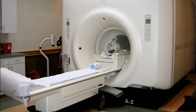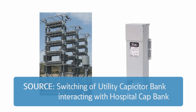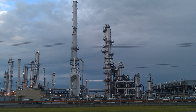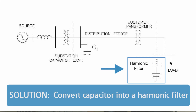Did you just apply a surge protector? No — in this case it required some detailed analysis. The symptom was the misoperation of MRI and CT scanners when the switching occurred, causing disruption and sometimes physical damage. The source was the utility cap switching, but it was related to the low-voltage cap in the hospital. We've seen this in other facilities like refineries and industrial plants using power factor correction caps. The solution was either to remove the low-voltage cap or make it into a detuned filter to move its resonant point so it wouldn't amplify the transient.